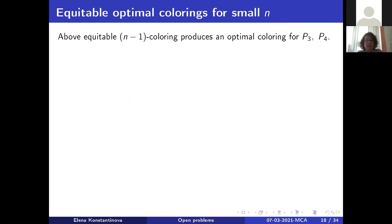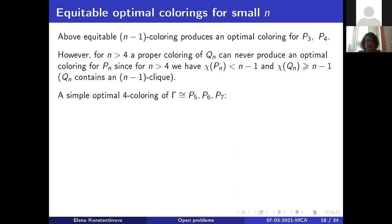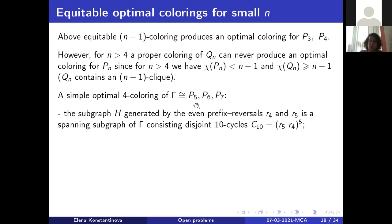The present algorithm gives optimal coloring for P3 and P4, but if n is bigger than four, a proper coloring of the auxiliary graph QN can never produce an optimal coloring for the pancake graph, since the chromatic number should be less than n minus one while the clique number of QN is n minus one. For n greater than four, we need another approach. For n equal to five, six, or seven, we consider even prefix reversals — those that are even permutations — specifically R4 and R5.